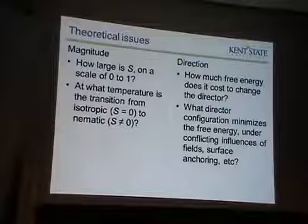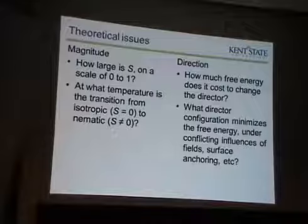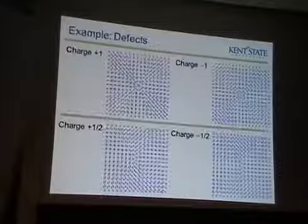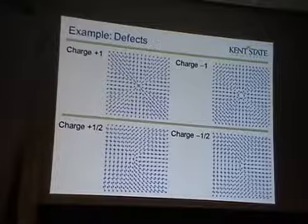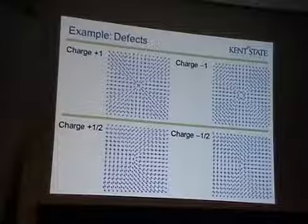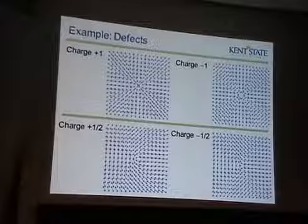For the direction, the kinds of questions to ask would be things like: how much free energy does it cost to change the director? Or what director configuration minimizes the free energy under conflicting influences of fields — electric field, magnetic field, surface anchoring — and anything else that people might want to do to change the director? That leads to the very complicated textures of liquid crystals, very complicated configurations of the director which can lead to very beautiful images as seen through a microscope. And in particular, one kind of thing that it can do is to make defects.